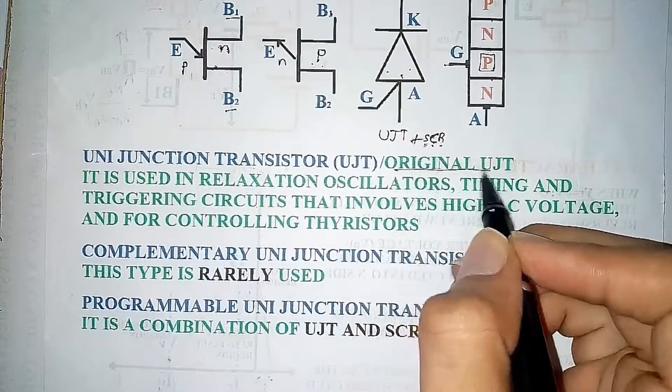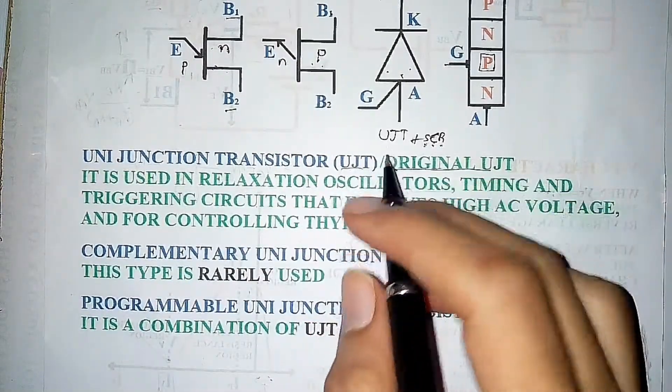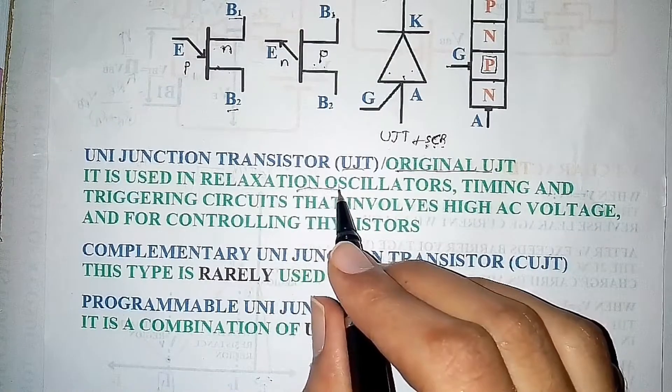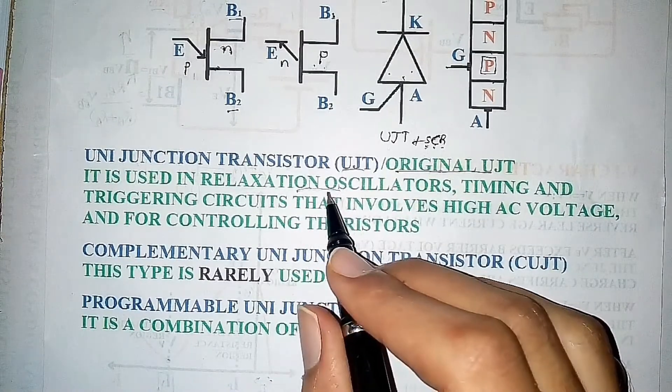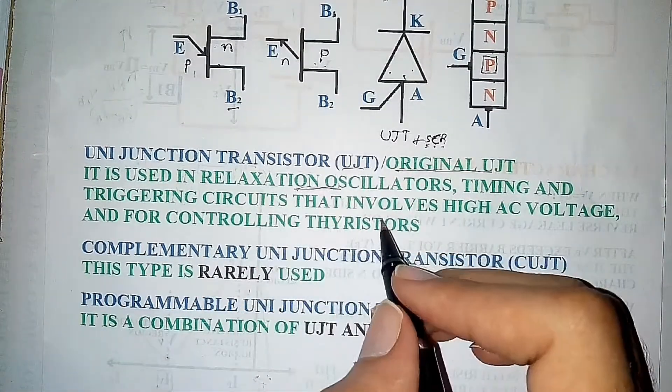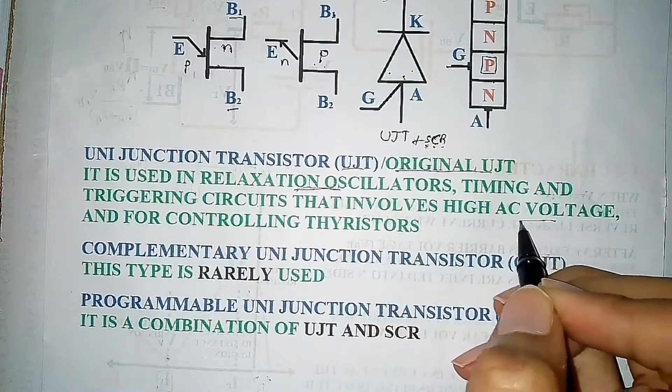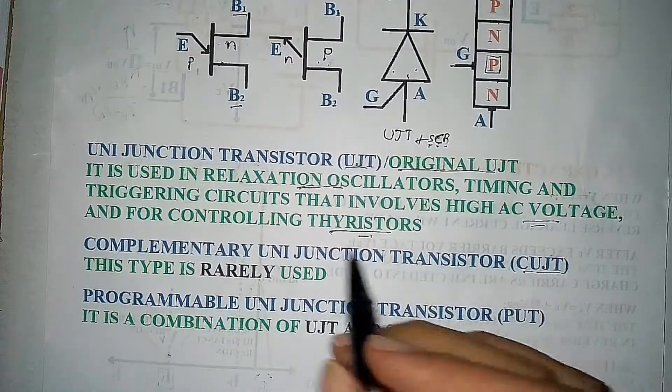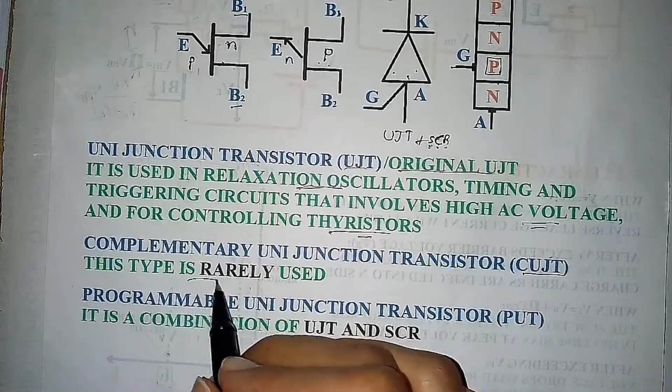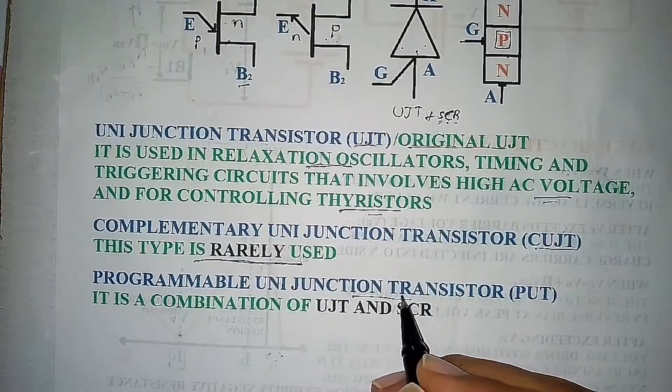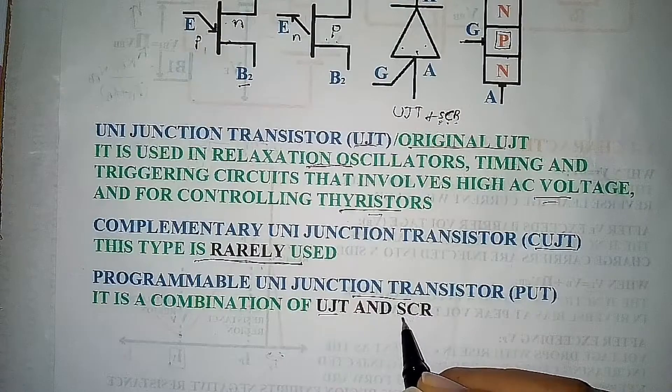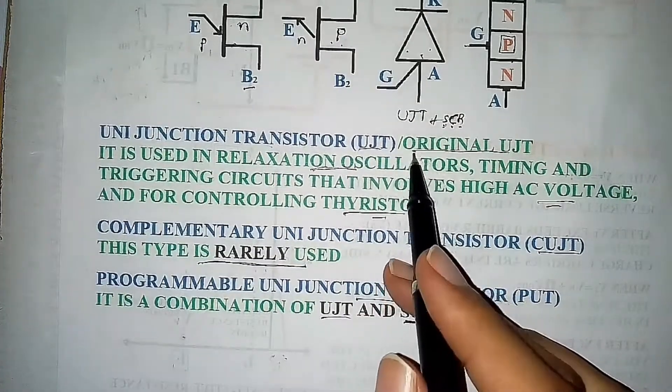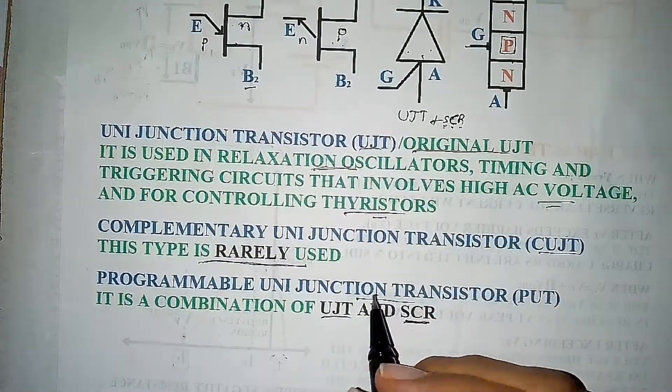Coming to applications, original UJT is used in relaxation oscillators due to its negative resistance characteristic, timing and triggering circuits that involve high AC voltages and for controlling thyristors. C-UJT or complementary UJT is rarely used. Programmable UJT which is a combination of UJT and SCR has same applications but has much higher power ratings.